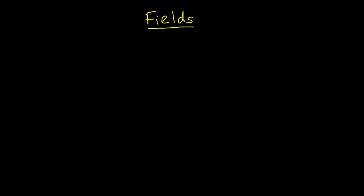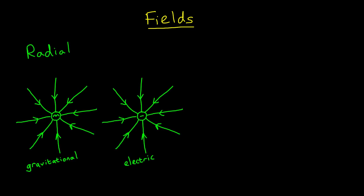Fields can form different patterns. Let's consider two: radial and uniform fields. Around a point mass or a point charge, a radial field will be established.